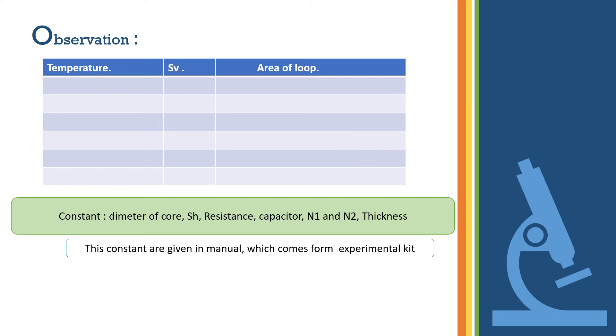How to perform the experiment? First, we connect the circuits at the Curie temperature kit to the CRO, and the resistance is connected at 5 ohm.